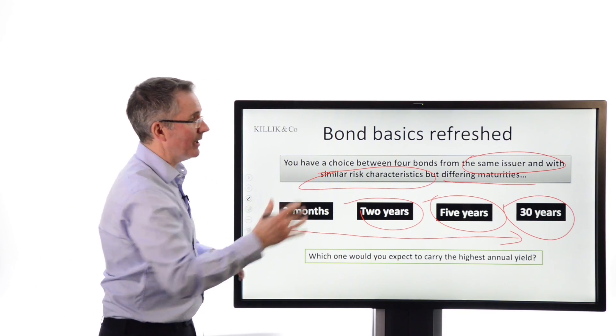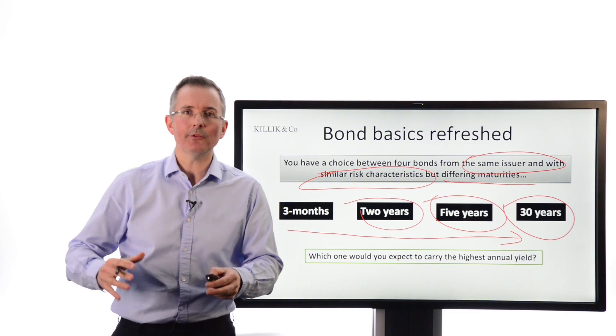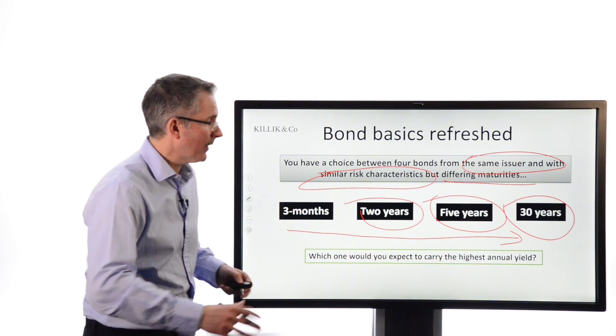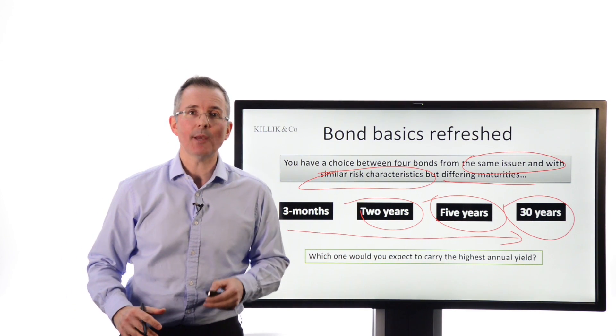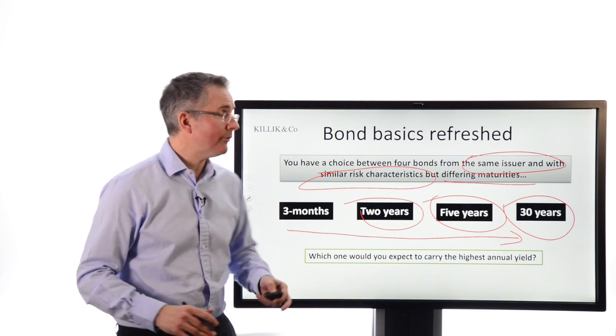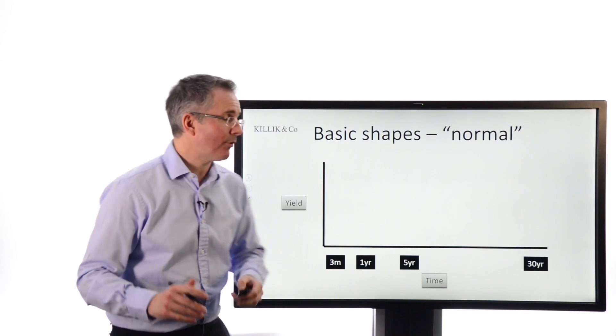the normal situation is you would expect to see yields for bonds. Don't forget, now, the same issuer could be the UK or the US government, similar risk characteristics in terms of likelihood of default and so on. But basically, you'd expect to see a rising relationship, and that's what you normally do see. The normal yield curve shape, therefore, is something like this.